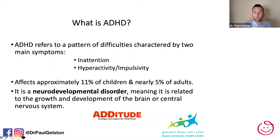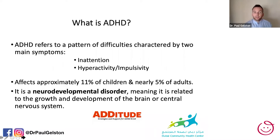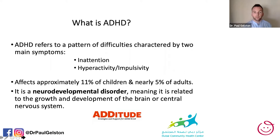ADHD affects approximately 10 to 11% of children and nearly 5% of adults. It's a very common condition in all our schools and classrooms. ADHD falls under the umbrella of a neurodevelopmental disorder, meaning it's related to the development and growth of the brain or the central nervous system. Parents often ask me what has caused this — is it something I did with parenting, with reward, with emotions? Generally the answer is no.